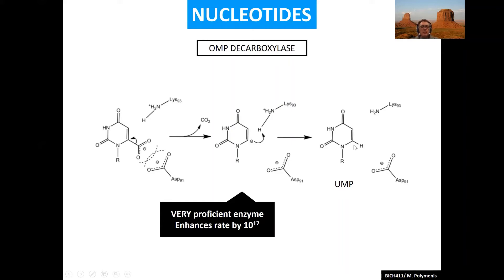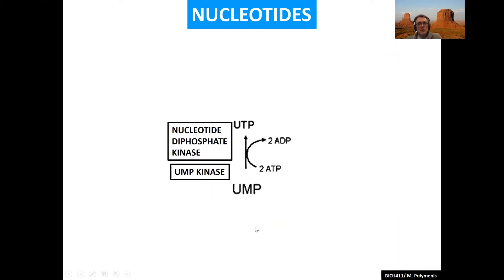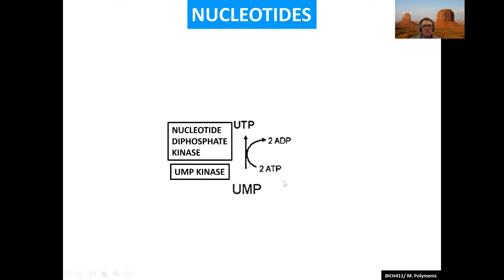The interesting part about OMP decarboxylase is that it's an extremely turbocharged enzyme — it increases the reaction rate by an astronomical amount. So you've got UMP. How do you get to UTP? There is an enzyme with broad specificity for all mononucleotides that will phosphorylate them — giving you the full complement of three phosphates, all the way to the gamma phosphate — whether it's U, A, G, or whatever. So you get UTP, which can now be incorporated into RNA.